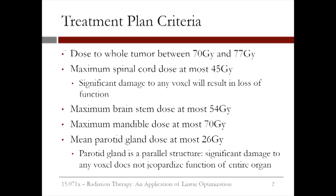In this example, we want the dose to the whole tumor to be between 70 and 77 gray. The spinal cord dose should be no more than 45 gray, since significant damage to any voxel in the spinal cord will result in loss of function. The brain stem dose should be no more than 54 gray, and the mandible dose should be no more than 70 gray. The average parotid gland dose should be at most 26 gray. This constraint is a little different, since the parotid gland is a parallel structure — significant damage to any one voxel does not jeopardize function of the entire organ.